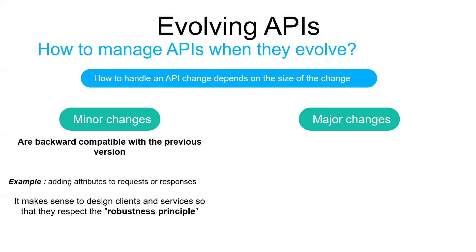For backward-compatible changes, older clients and newer services must use a format that supports the robustness principle: be conservative in what you do and be liberal in what you accept from others. For example, services should provide default values for missing request attributes, and clients should ignore any extra response attributes.